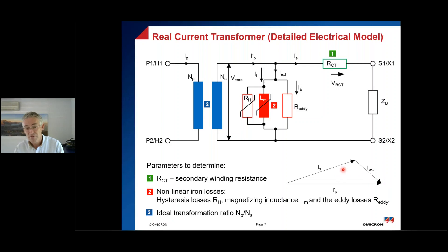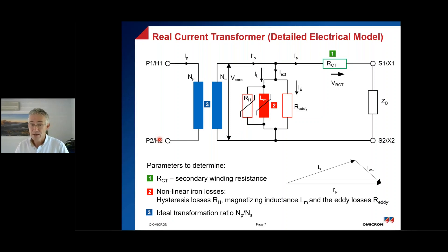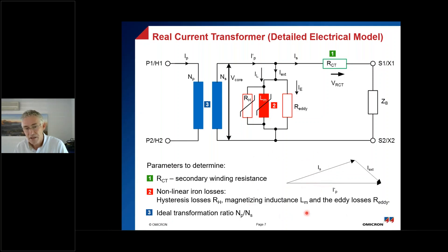From the vector diagram we see two important effects: first, IS is always smaller than IP in magnitude, meaning a CT will always have a negative amplitude error — it outputs slightly less current than the ideal primary current. Second, IS leads the transformed primary current IP', meaning a CT always shows a positive phase angle error. This is consistent with what we observe in measurements, and both effects will be confirmed in the case studies.